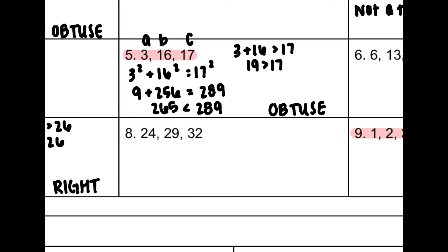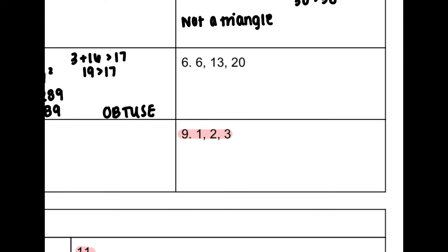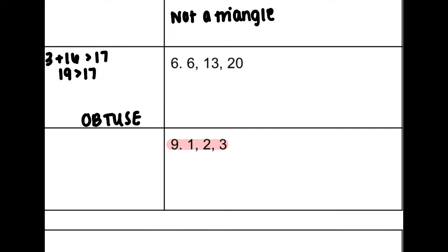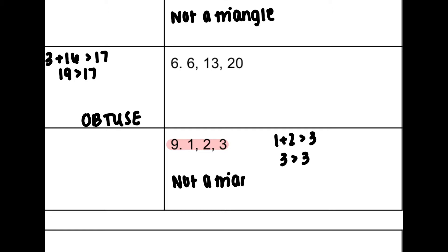And finally, the last problem in this section is number 9. I check my side lengths: 1 plus 2 is 3, and 3 is not greater than 3 — it's equal. So again, this is one of those situations where it's not even a triangle, and we stop there.